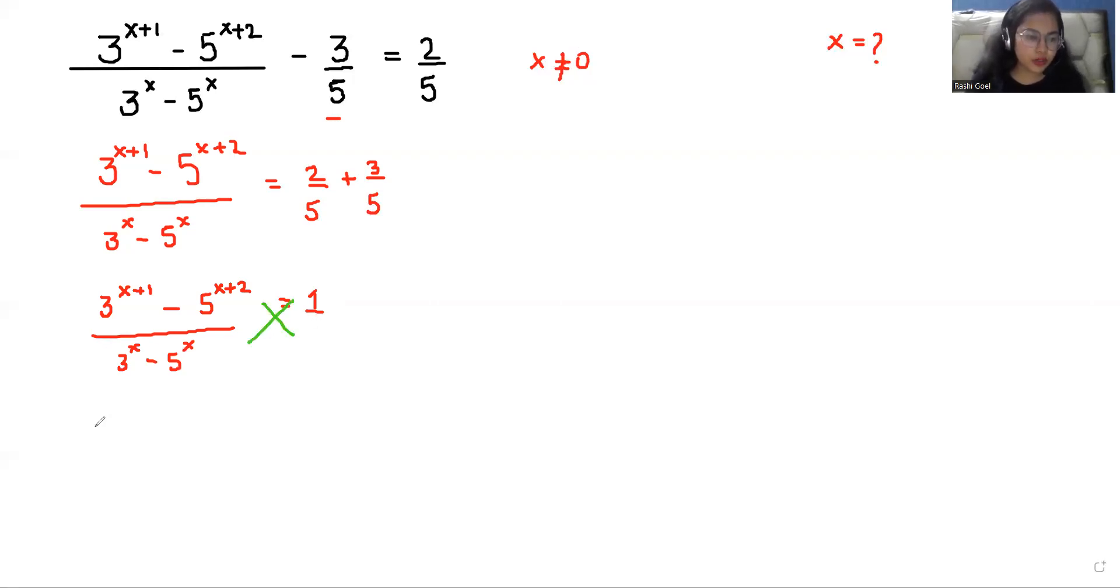After that the equation look like 3 power x plus 1 minus 5 power x plus 2 is equals to 3 power x minus 5 power x.